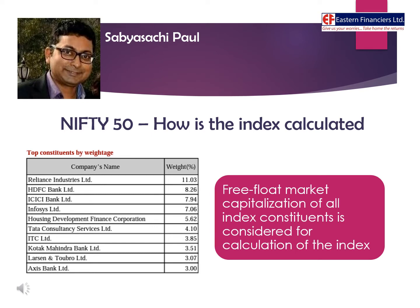The IWF for each company in the index is determined based on the public shareholding of the companies, as disclosed by the shareholding patterns at the end of every quarter.